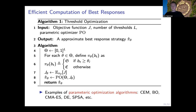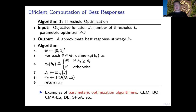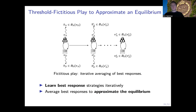We essentially transform the original dynamic programming problem for computing the best response — which has a huge strategy space — into a parametric problem with a much smaller threshold strategy space. This only gives us a best response, which in game-theoretic terms is an optimal strategy against a fixed opponent. In practice as a defender, we don't know what strategy the attacker will follow, so we want to find a strategy that maximizes the minimum level of defense we can guarantee against any attacker — that corresponds to a maximin strategy, which coincides with a Nash equilibrium since we have a zero-sum game.